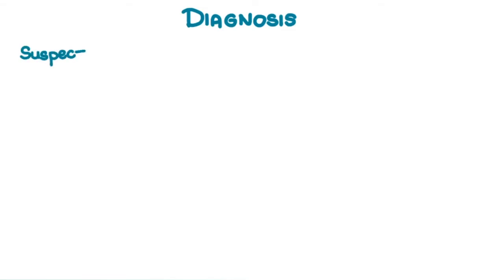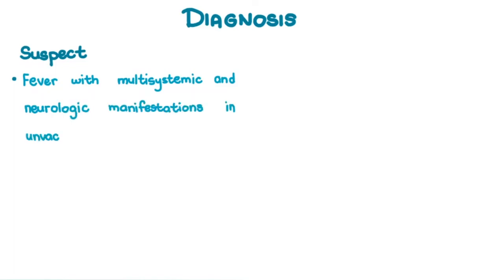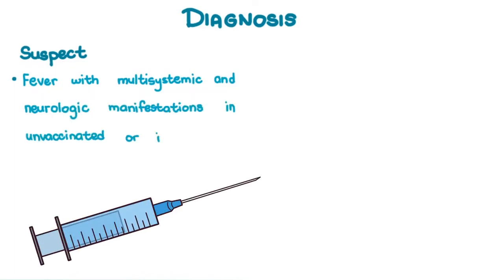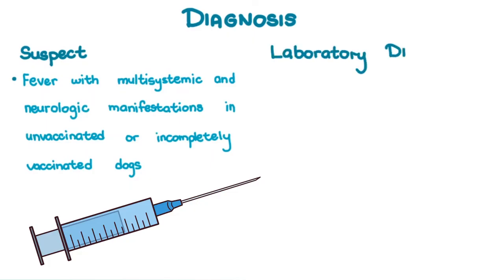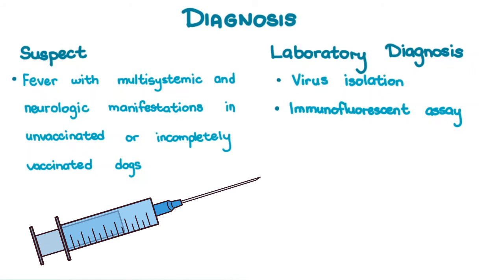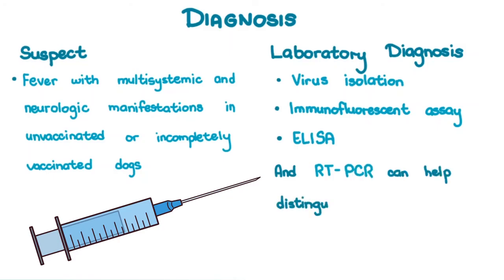Distemper is suspected in cases of fever with multisystemic and most especially neurologic manifestations in unvaccinated or incompletely vaccinated dogs. Laboratory diagnoses such as virus isolation, immunofluorescent assay, and ELISA are needed to confirm the diagnosis. RT-PCR can help distinguish between field and vaccine viruses.